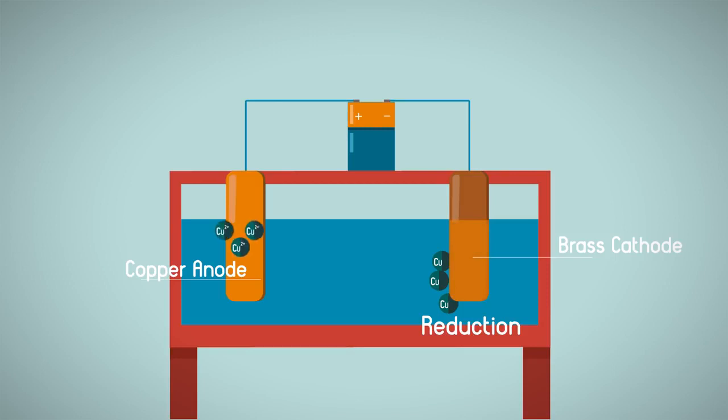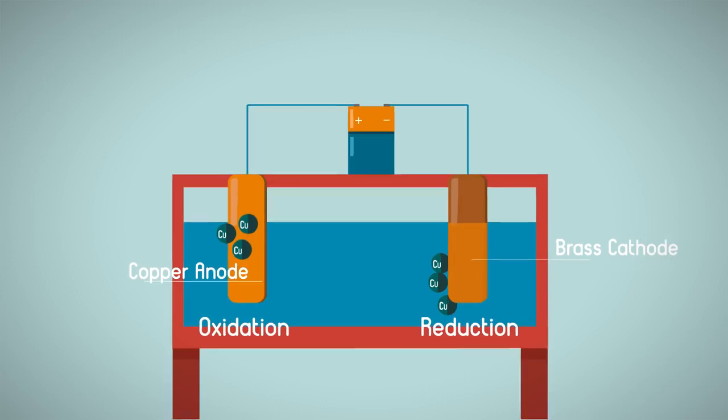At the anode, the current causes the metal atoms to lose electrons and dissolve into the electrolyte solution. The electrons, which the metal atoms lose, flow back to the power source and around to the cathode. Losing electrons at the anode is known as oxidation. So just remember, we have reduction at the cathode and oxidation at the anode, and that's electroplating.